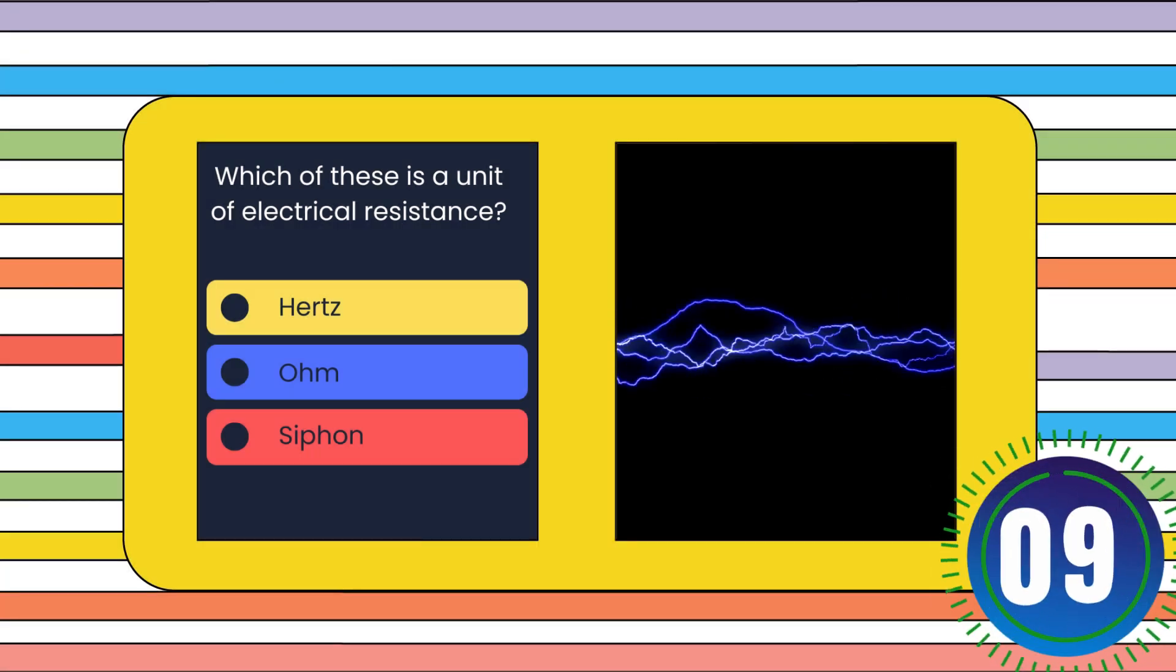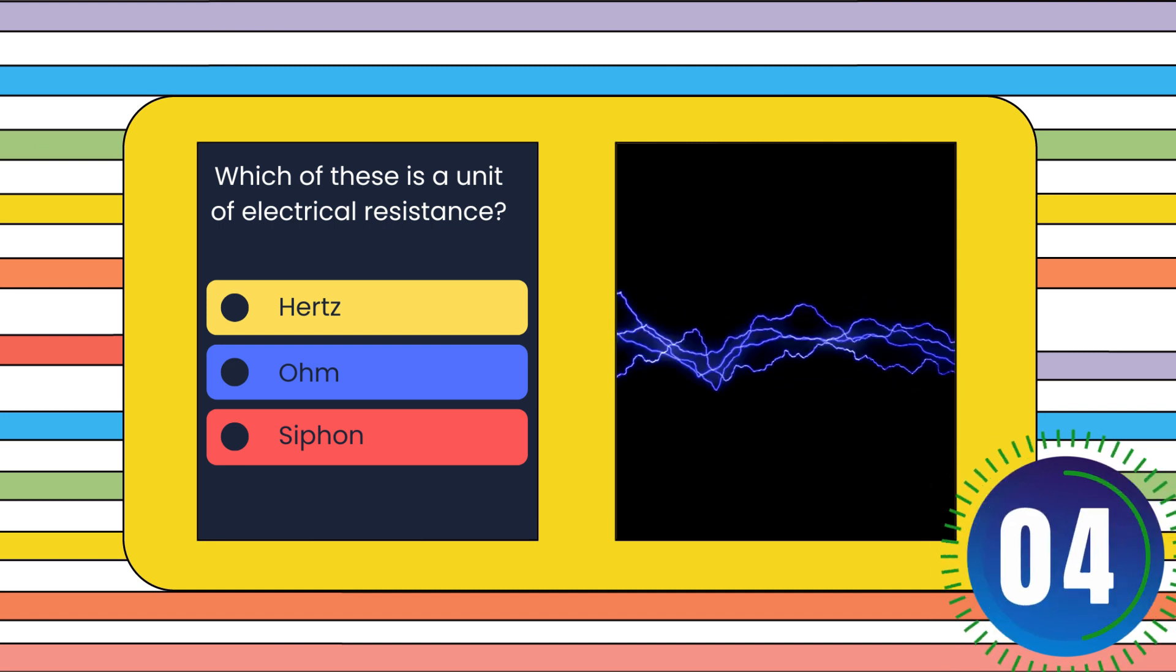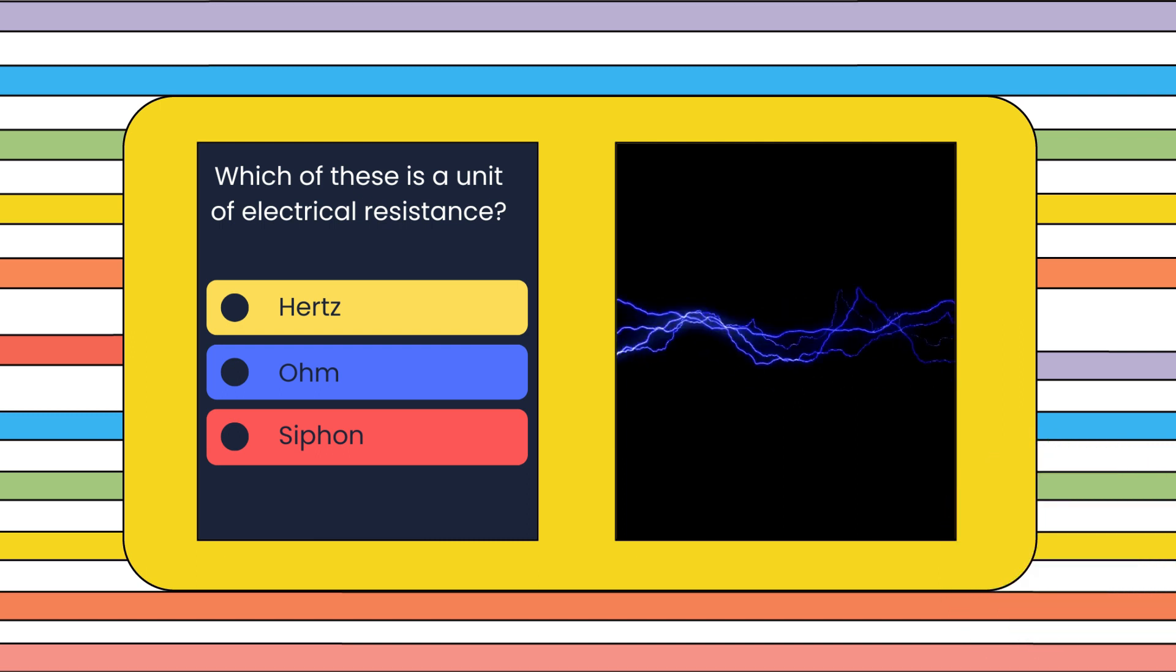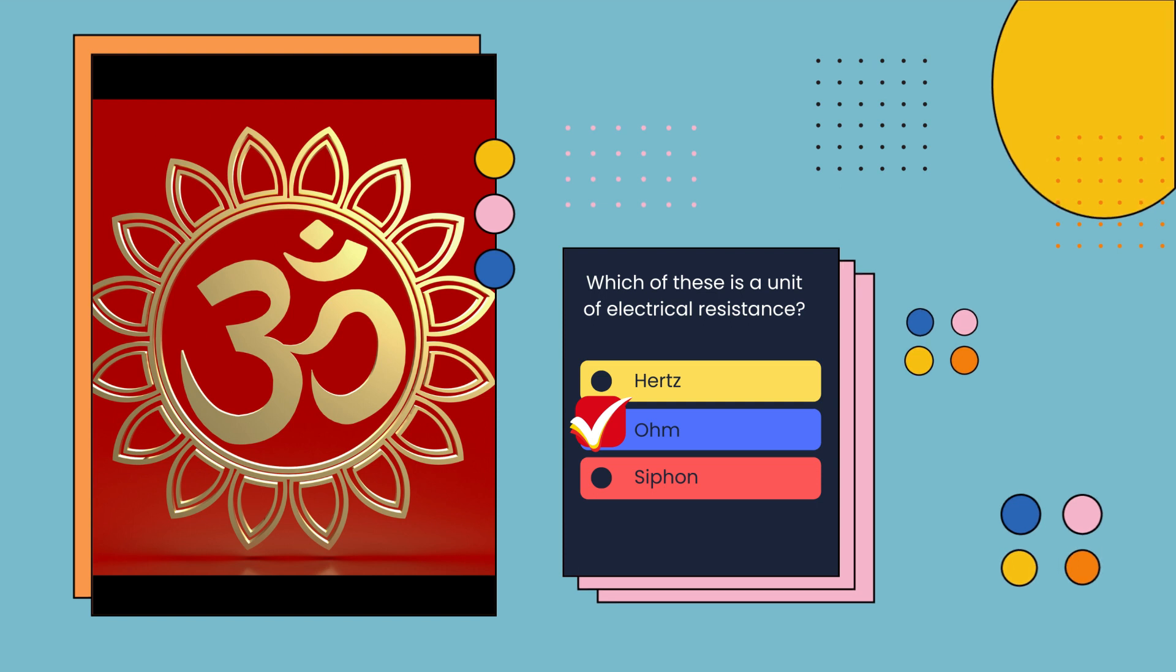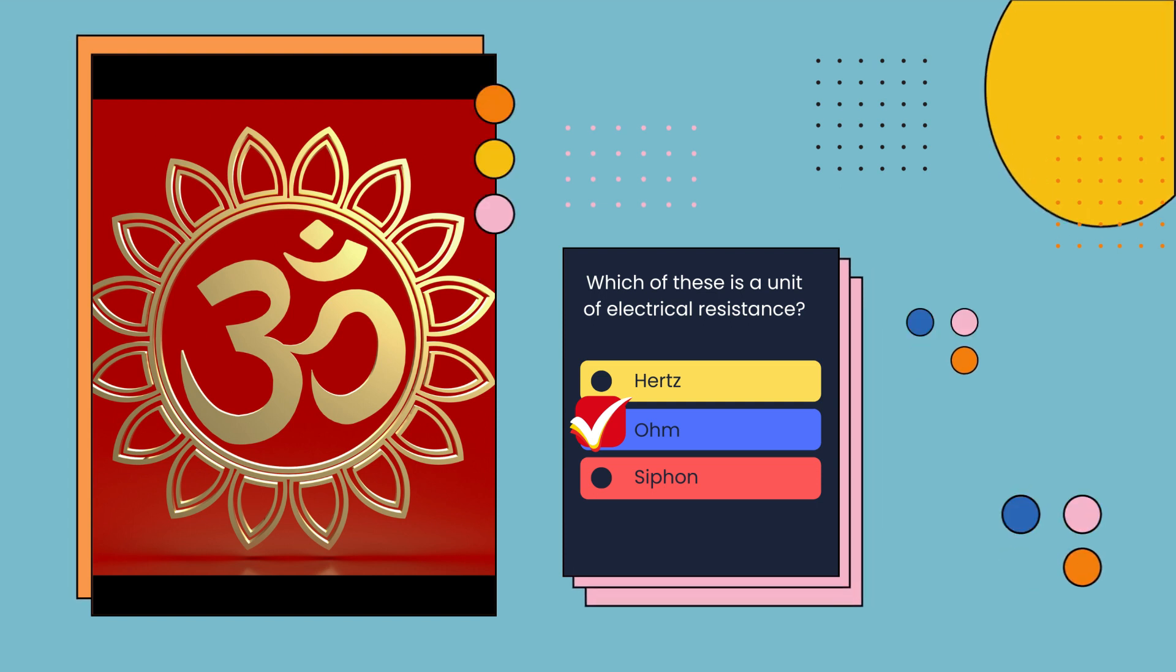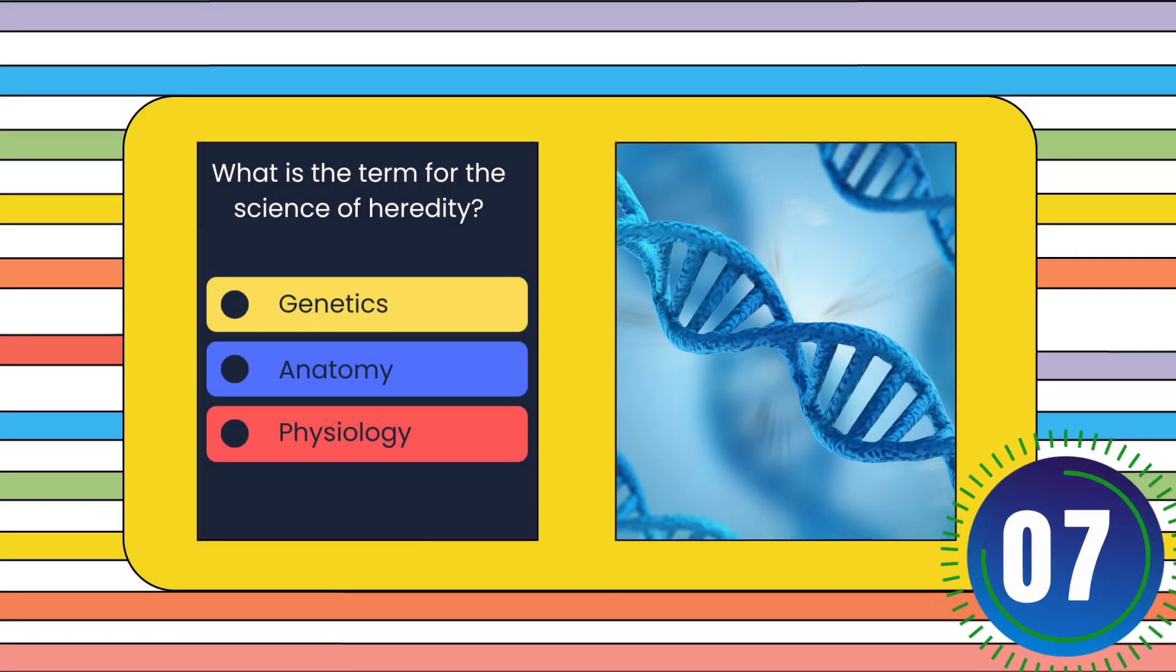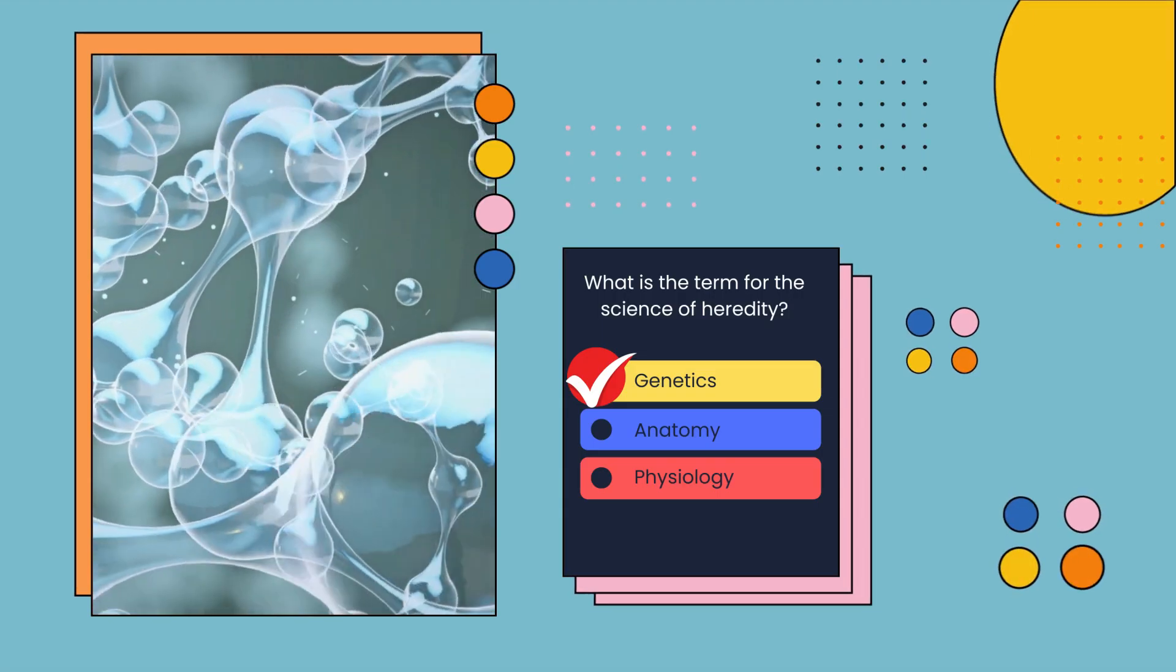Which of these is a unit of electrical resistance? Hertz, ohm, or siemens? What is the term for the science of heredity? Genetics, anatomy, or physiology? Genetics.